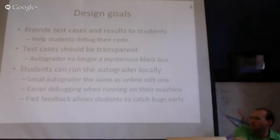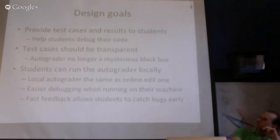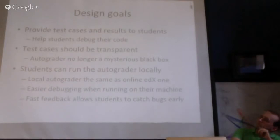We wanted the test cases to be transparent. The problem before was that students basically got a pass or fail and some mysterious errors about why things didn't work. Here we wanted to say: this thing is wrong with your code. You created a heuristic which failed this property that it needs to have. Your search code fails on this particular map, which is small enough that you can actually run through it by hand and figure out what's going on.